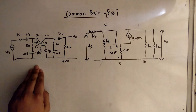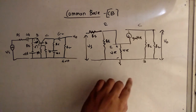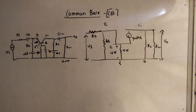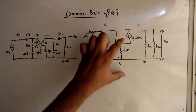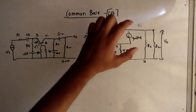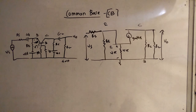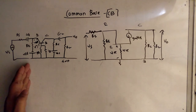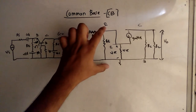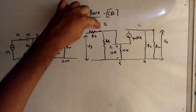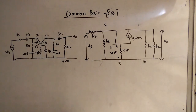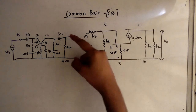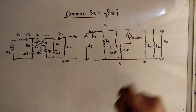To recap: this is the common base circuit and the mid-frequency AC analysis. Base is at the bottom; left side is the emitter, right side is the collector. There is one resistance R pi from B to E, and one current source GM Vpi from C to E — that is compulsory. On the emitter side we have RE in parallel, RS in series, and voltage VS. On the collector side we have RC, then RL, and the output voltage.